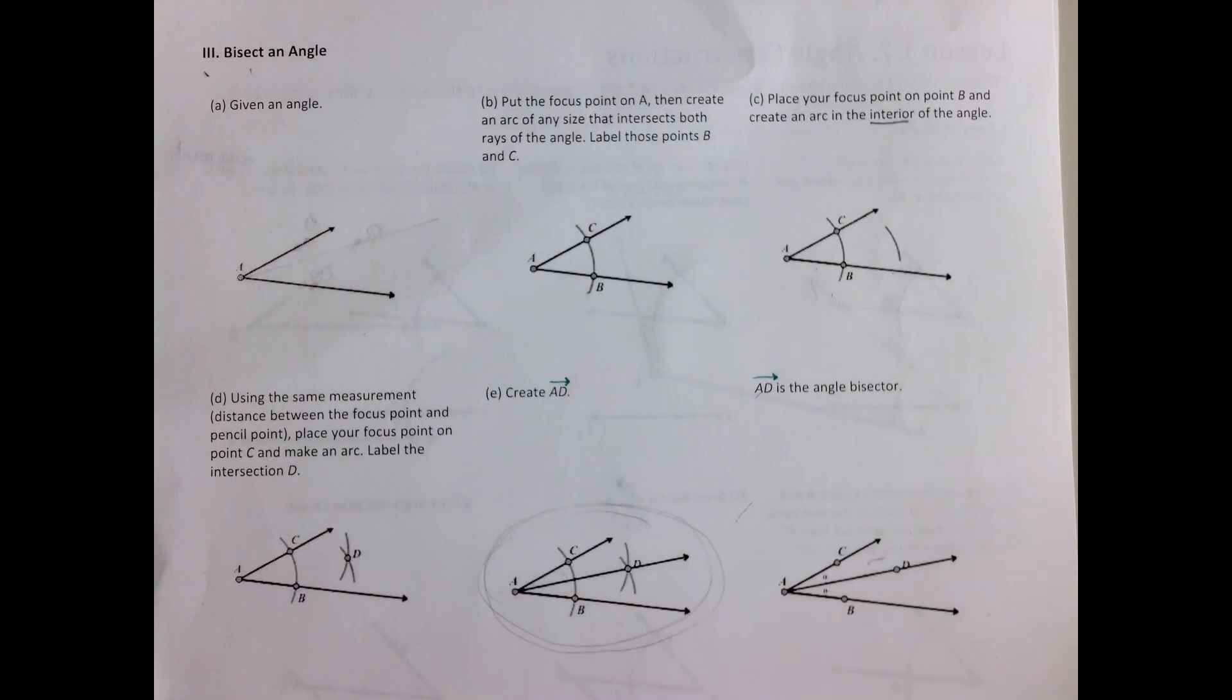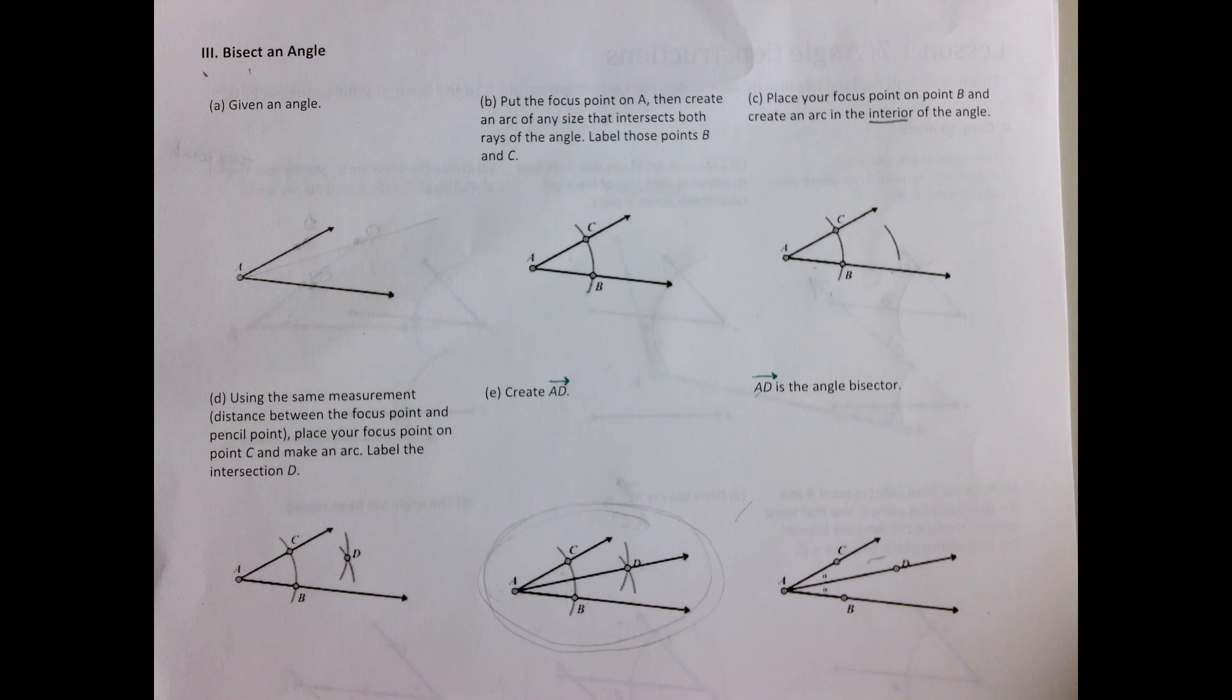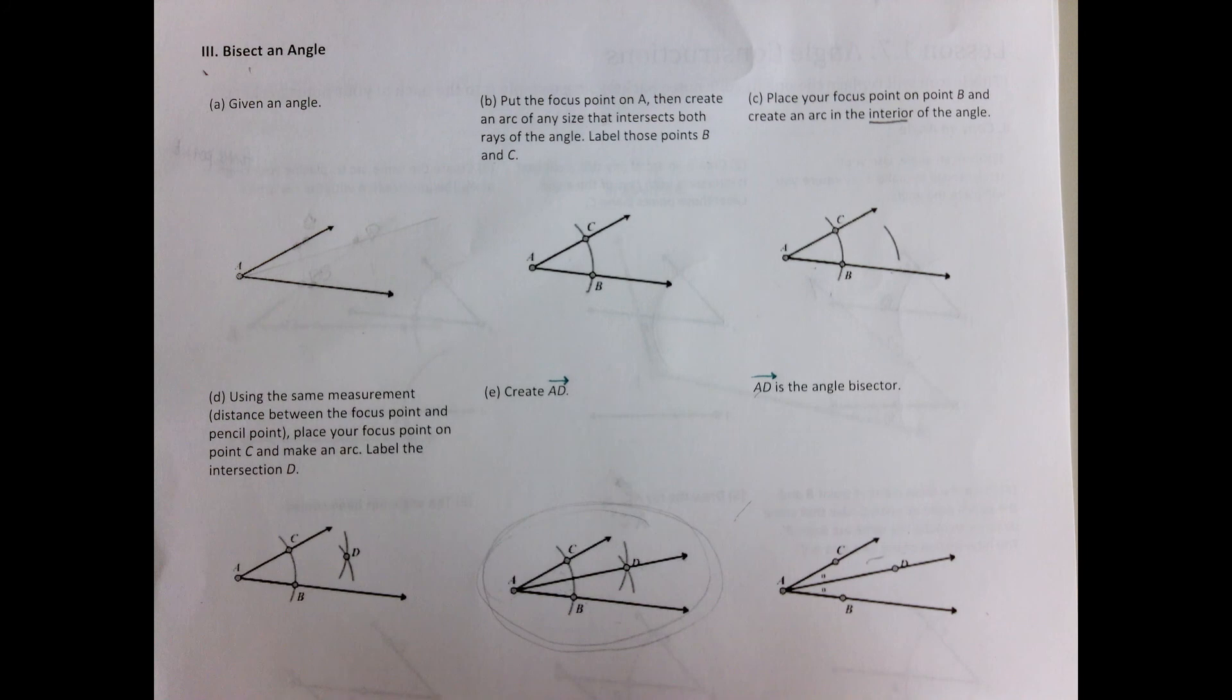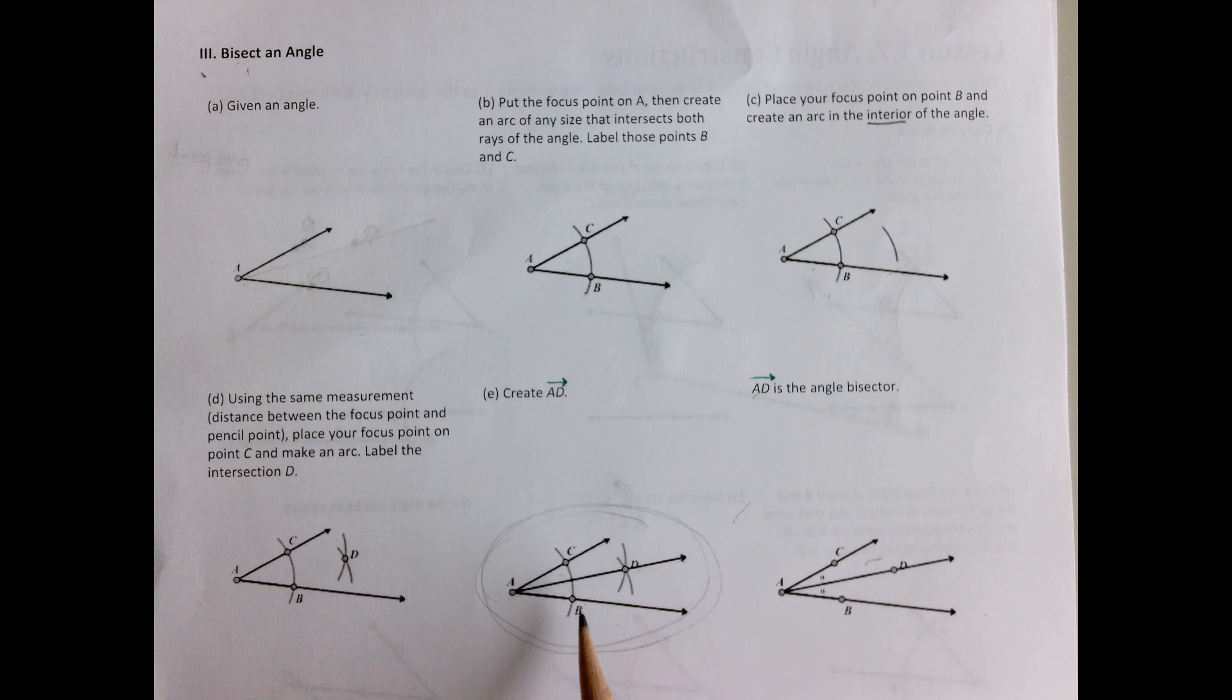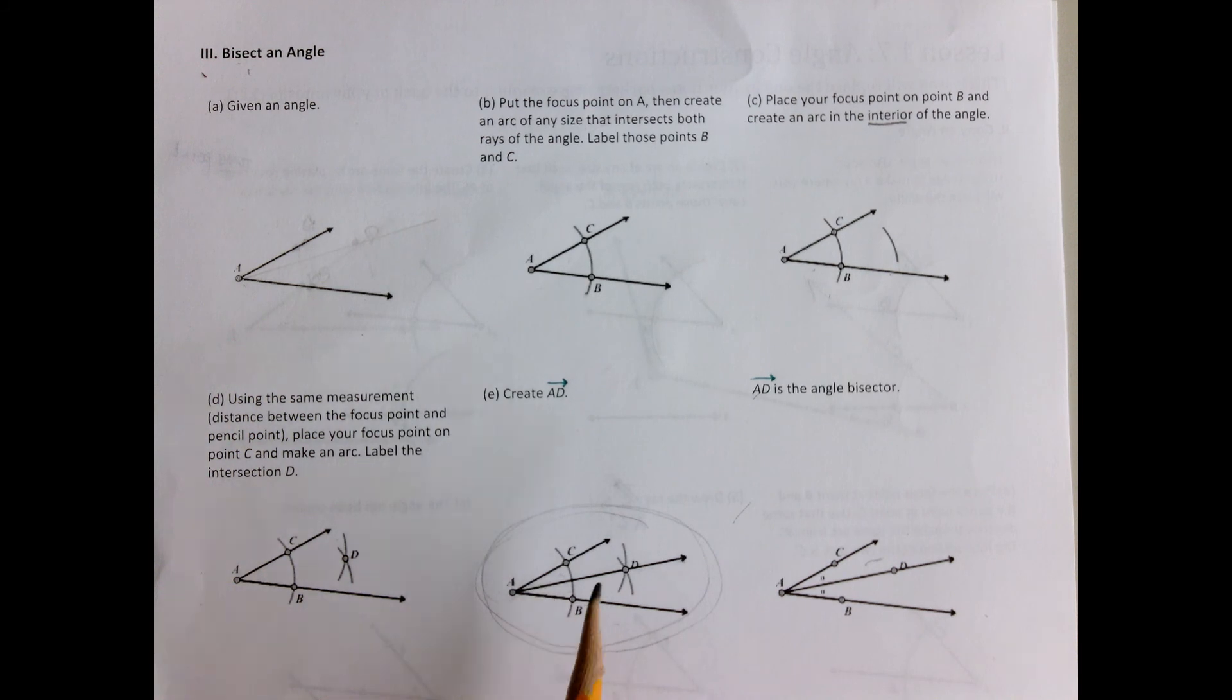Okay folks, so on to part two of angle constructions. For this part we will be bisecting an angle. For part one you copied an angle. Let's talk about what bisect means. Bisect means to take this angle and split it into two congruent angles.